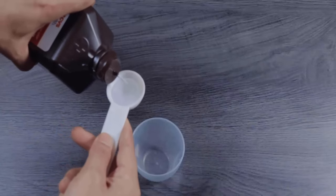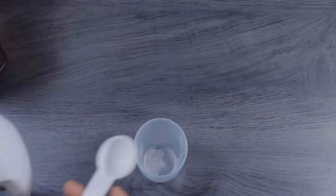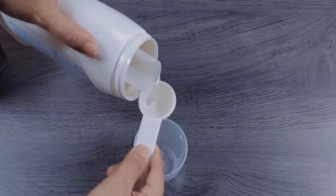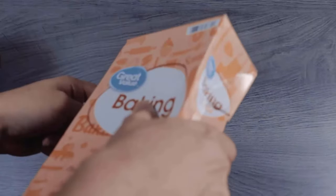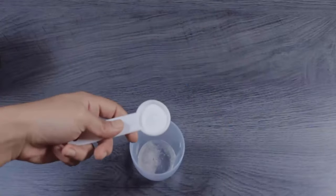For another method, add one tablespoon of hydrogen peroxide to a bowl, then add one tablespoon of liquid detergent. Now add one tablespoon of baking soda and mix it well.